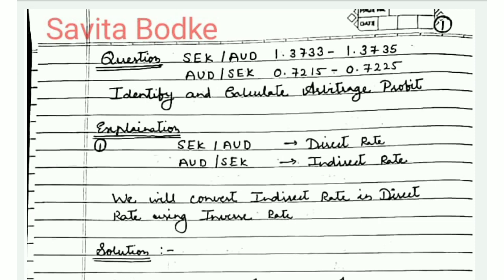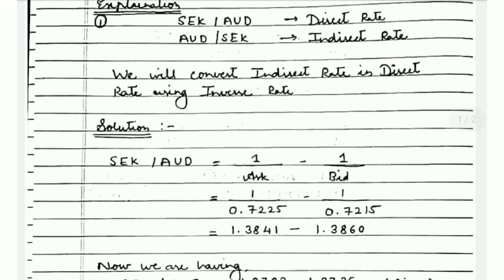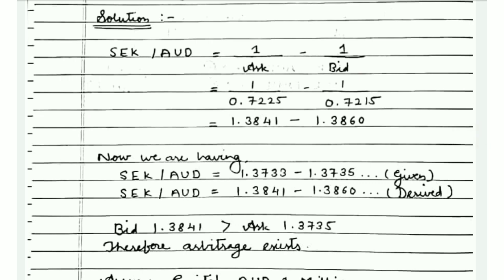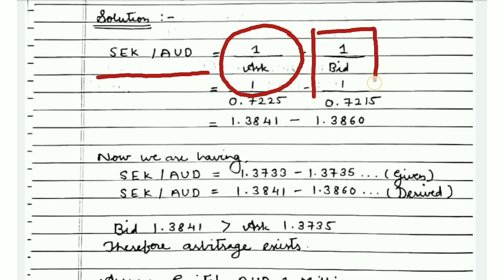To convert the indirect rate to a direct rate, we use the inverse rate formula we have already studied. For the inverse rate, the bid is calculated as 1 divided by the ask, and the ask is calculated as 1 divided by the bid. So for the direct rate SEK/AUD, I apply this formula: bid = 1 ÷ ask, and ask = 1 ÷ bid.